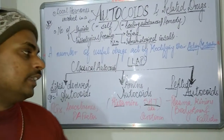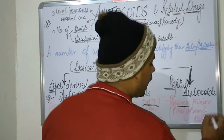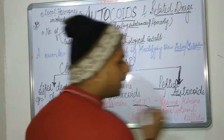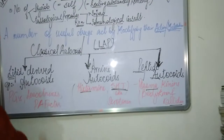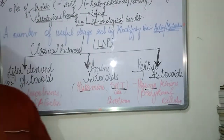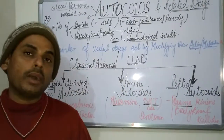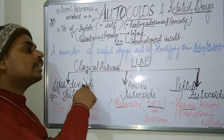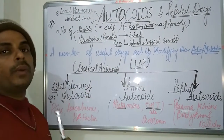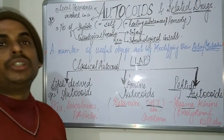The P of LAP refers to peptide autocoids. The best examples of peptide autocoids include the plasma kinins, specifically bradykinin and kallidin.